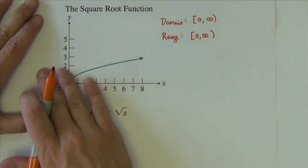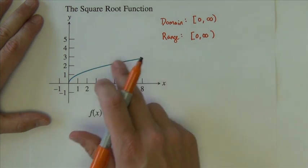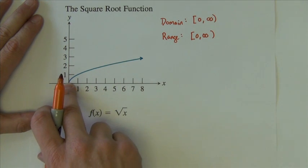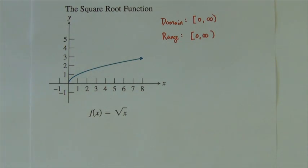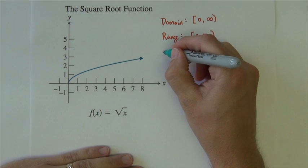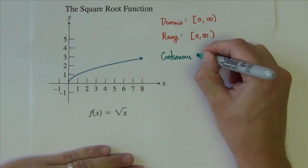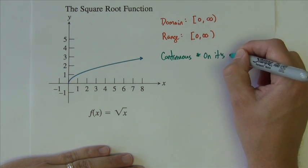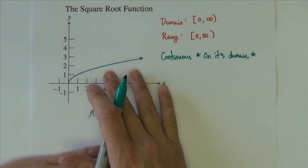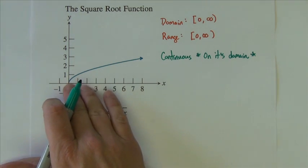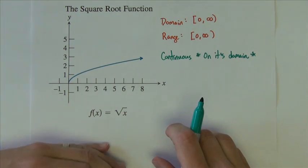That can, of course, change if this graph function were moved around. But for this, it's 0 to infinity. It's important to note that 0 is a physical endpoint, and it doesn't go beyond that. This graph is continuous. I'll add it's continuous on its domain. It's not continuous for all real numbers, because it doesn't go over to these negative real numbers. But for its domain, 0 to infinity, it's continuous there. There's no breaks from 0 to infinity, is what I mean by that.